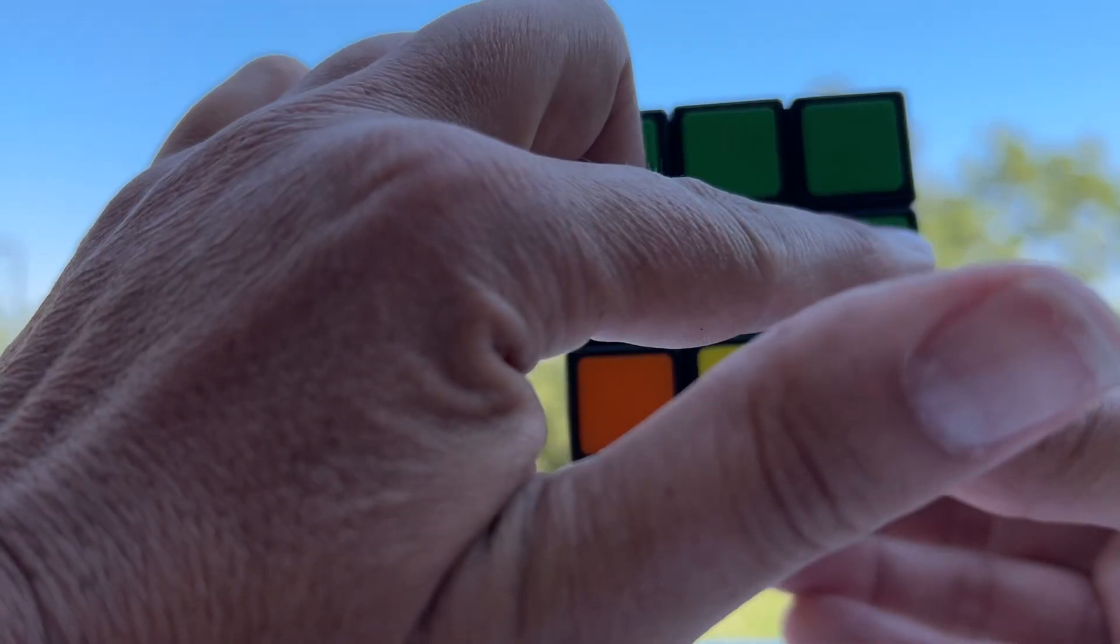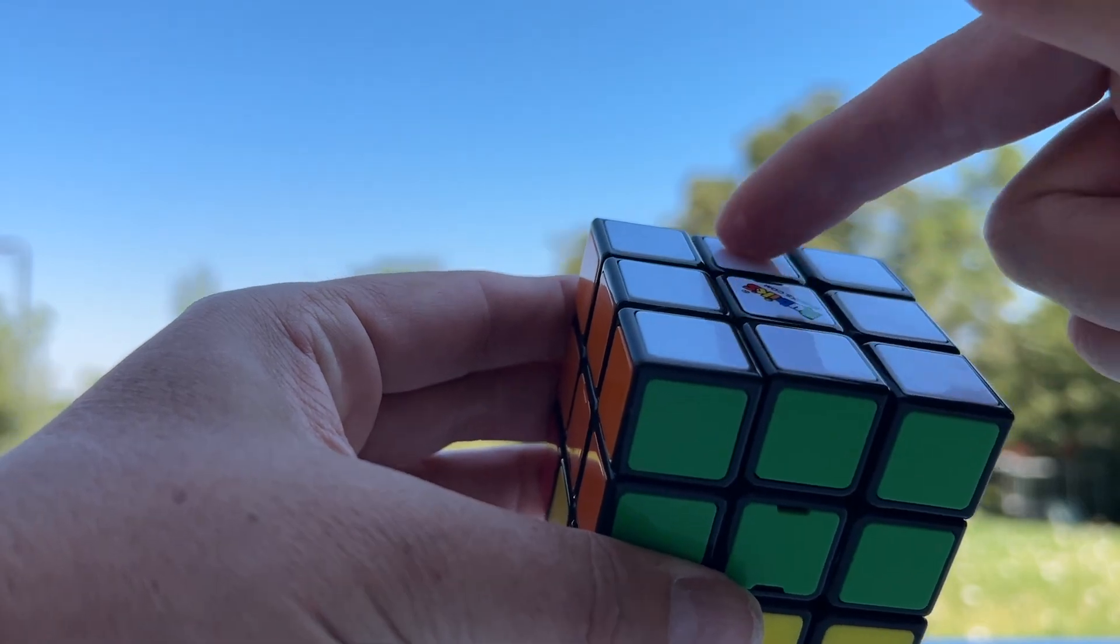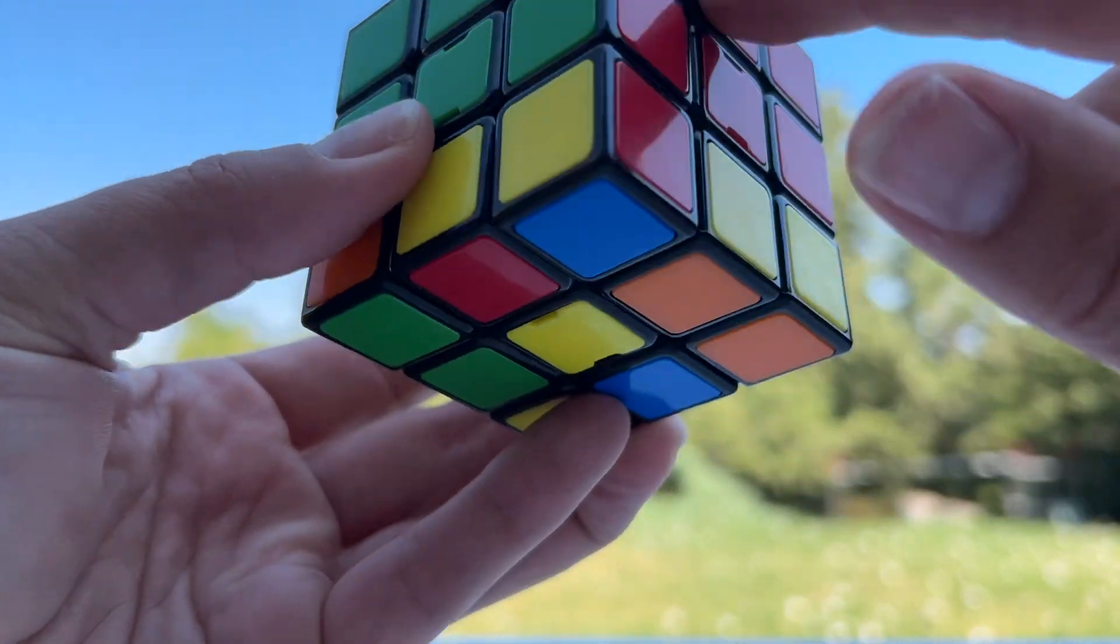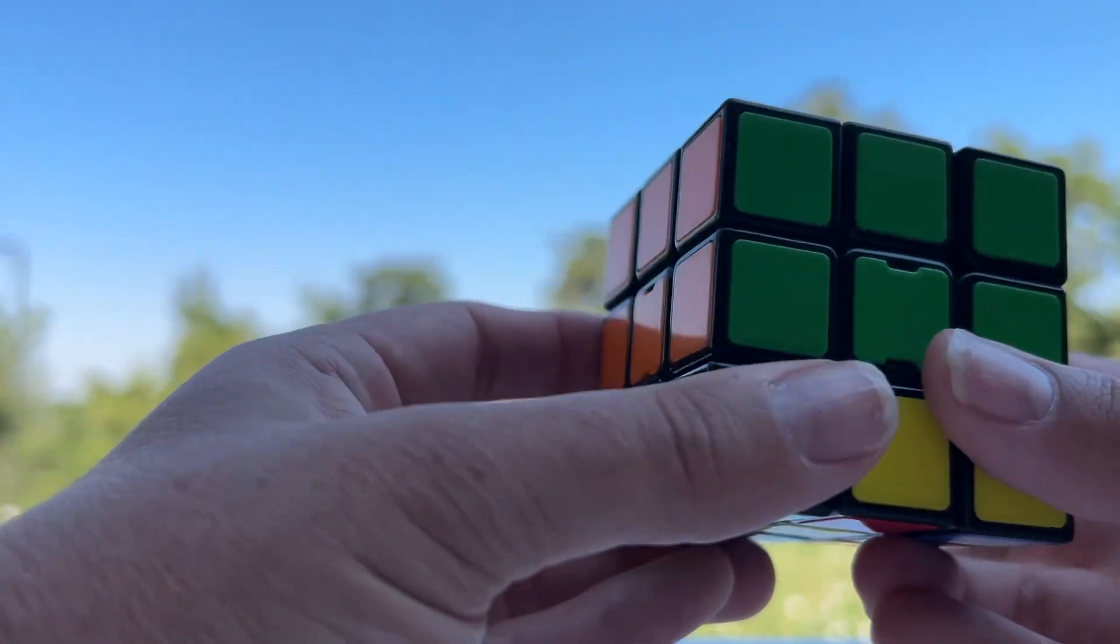Working on the second layer. So the middle layer is this layer. Your first layer should be completely solved. You have white and then all of these match and they also match the centers there. So this is what your cube will look like when it's all completed.